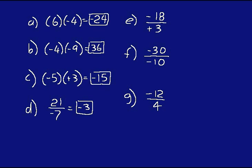On E, you have a negative 18 over a positive 3 — different signs, so your answer is negative 6. On F, same signs, so your answer will be positive 3.